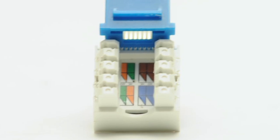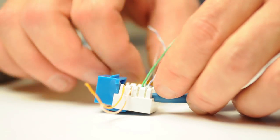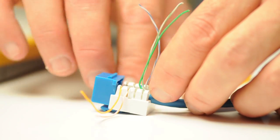For most applications, choose the 568B color code. Insert the conductors on top of the IDC connectors and push them down with a little force.